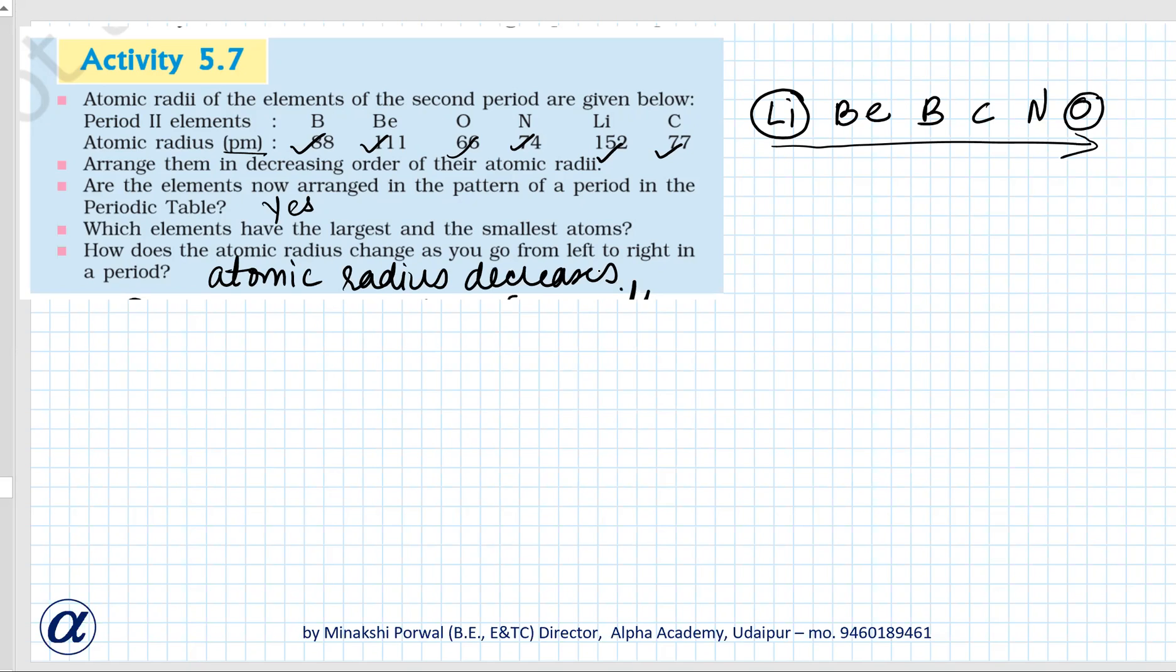This is due to increase in nuclear charge which tends to pull the electrons closer to the nucleus, and hence atomic size decreases. Like in the case of lithium - three protons and three electrons. In case of beryllium - four protons, four electrons.